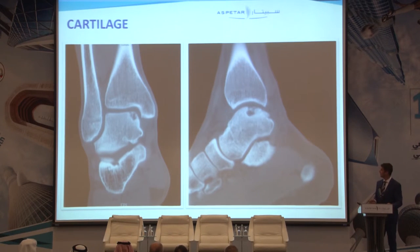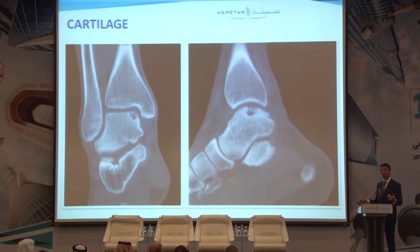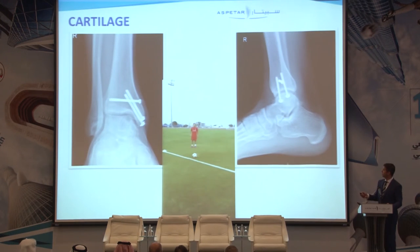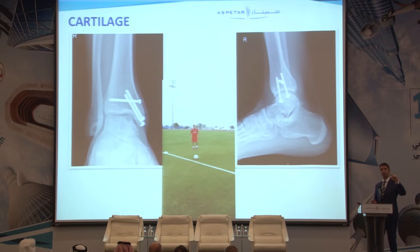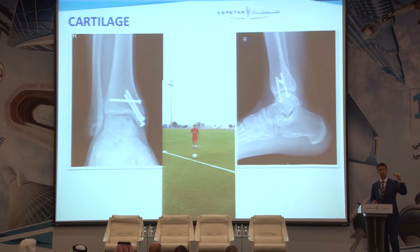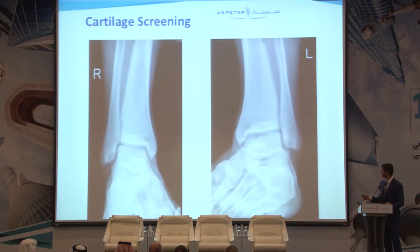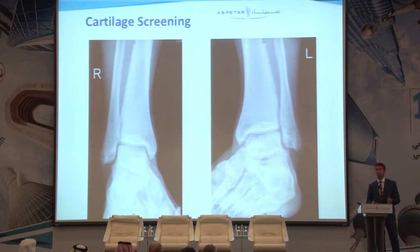Unfortunately there are still cases that fail. We received a referral from Europe — an elite national team player treated twice with microfracture who kept having locking and difficulty playing and training. We went further: we took two osteochondral plugs from the knee arthroscopically and placed them in the ankle using an OATS procedure to seal off the defect. When microfracture can't do it, the biology isn't sufficient. This shows him playing after three and a half months.